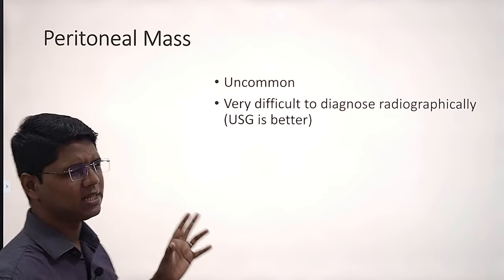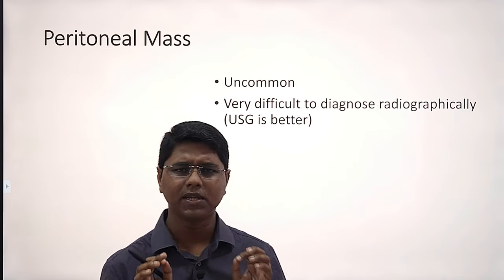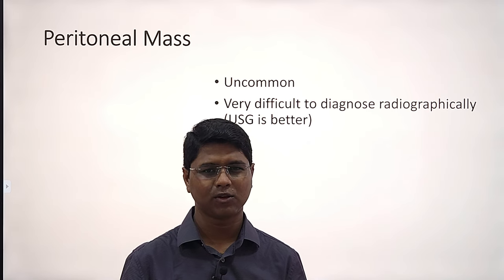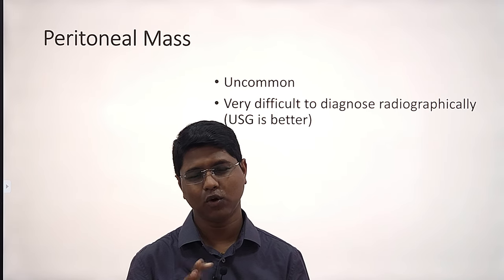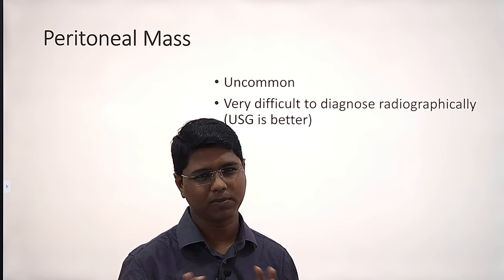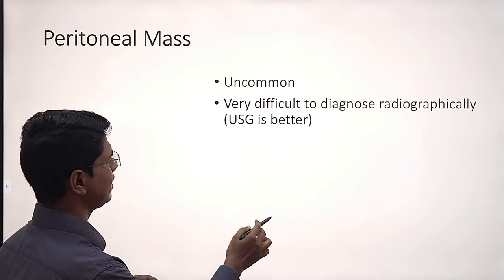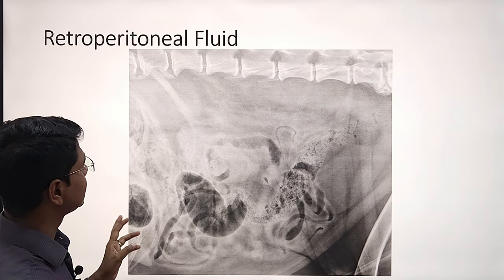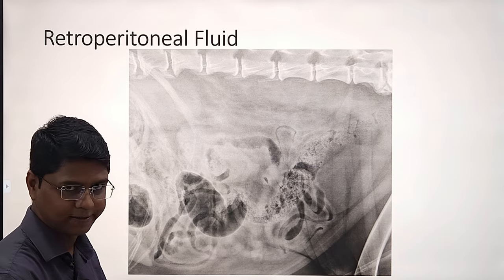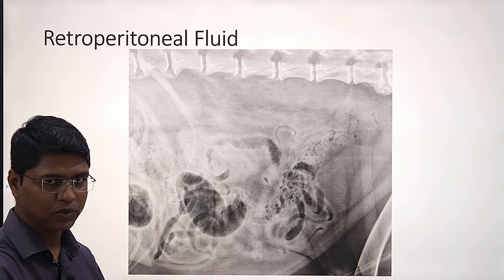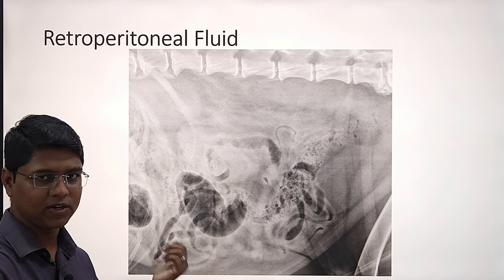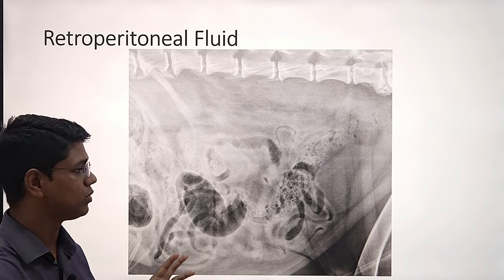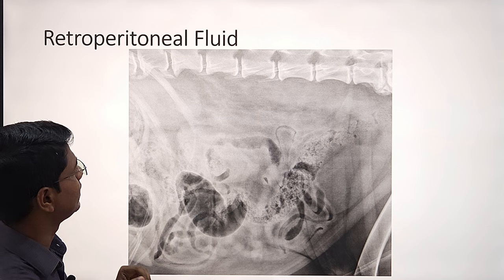Peritoneal masses are very uncommon. Usually they are diagnosed by ultrasonography, not by radiography. Next, retroperitoneal fluid — the most common cause is hemorrhage, and this hemorrhage happens due to trauma.